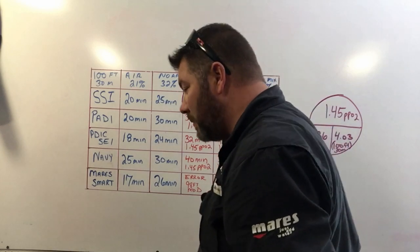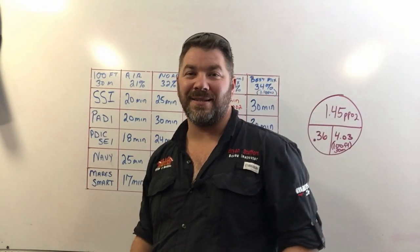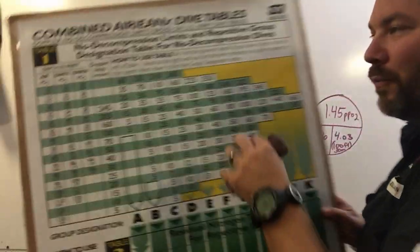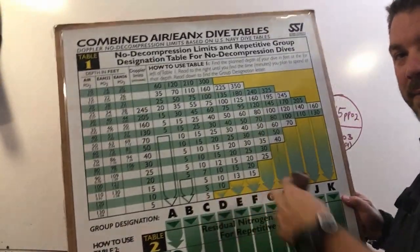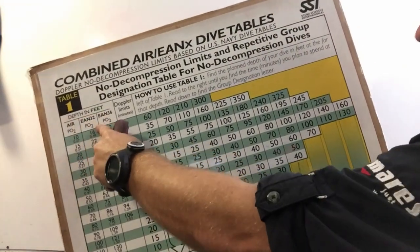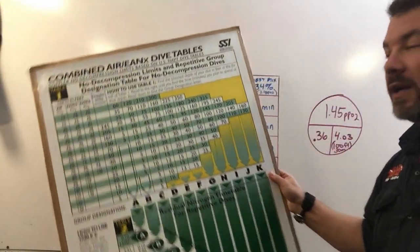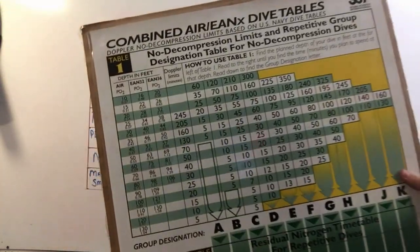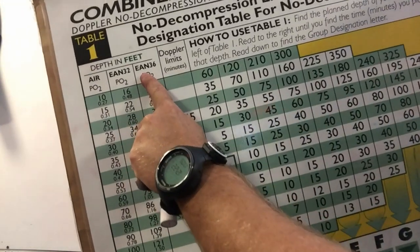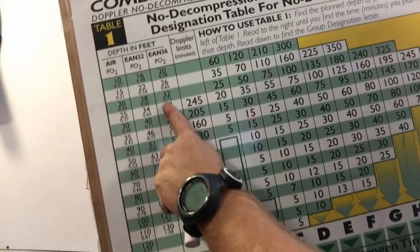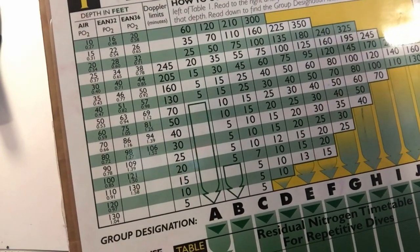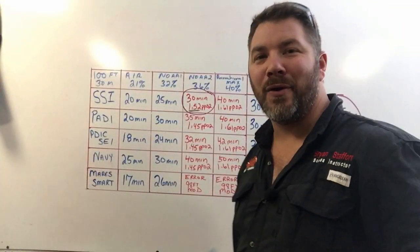So now let's just see why SSI is a little bit different and it's a very simple reason. One cool thing about SSI tables that I really like: air, NOAA 1, NOAA 2, they're all on the same set of tables so it's very easy to use. If I use enriched air 36 and I go down to 100 feet, I don't see 100 feet. It's not even on the table.